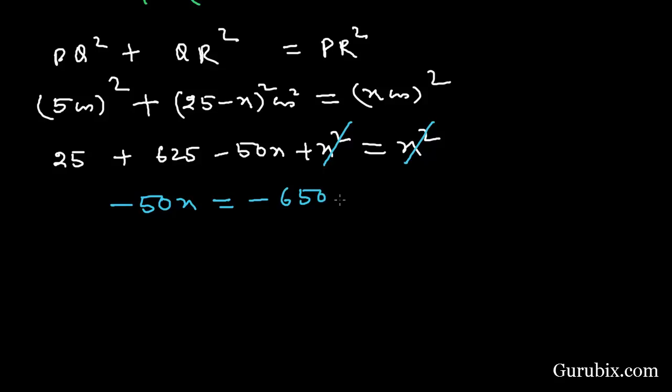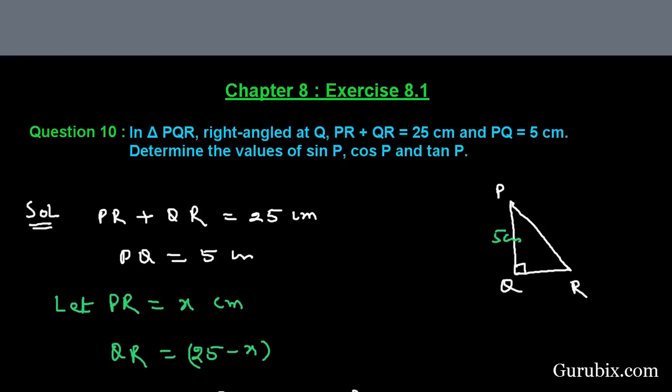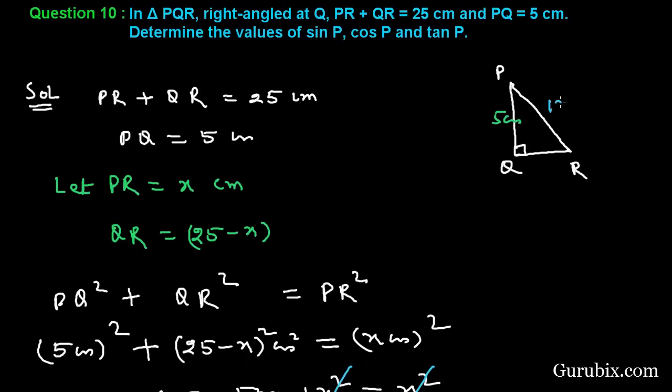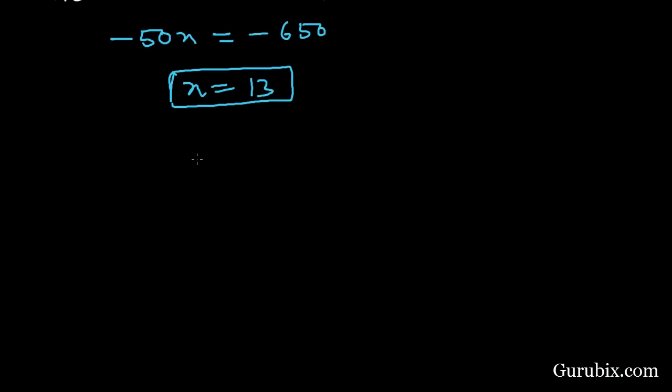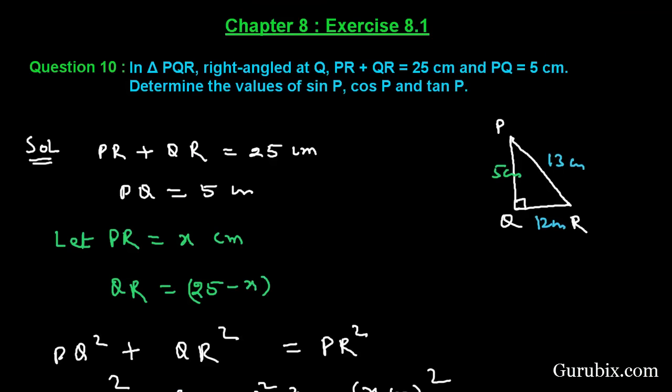Then x is equal to 13. So here we have calculated PR is equal to 13 centimeters. Therefore QR will be 12 centimeters. And now we shall find sin P, cos P, and tan P. Sin P will be the side opposite to angle P over hypotenuse.